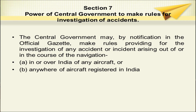Section 7 of the aircraft act gives power to the central government to make rules for investigation of accidents. The central government may by notification in the official gazette make rules providing for the investigation of any accident or incident arising out of or in the course of the navigation in or over India of any aircraft, or anywhere of aircraft registered in India.